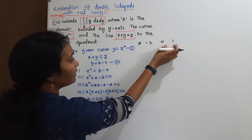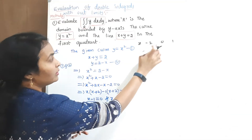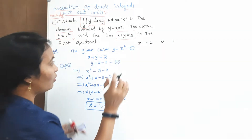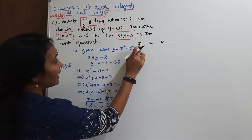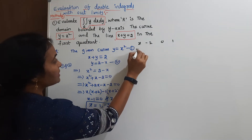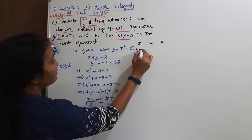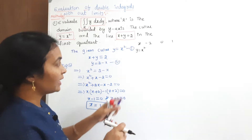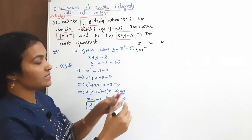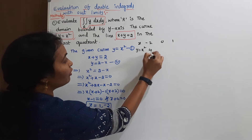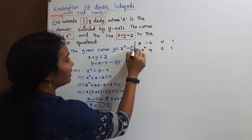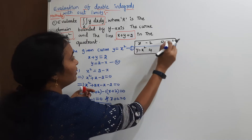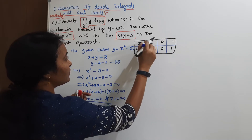Consider the first given curve y equals x squared. Substituting the x values: when x equals minus 2, y equals 4; when x equals 0, y equals 0; and when x equals 1, y equals 1. This gives us the table for the first curve.